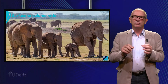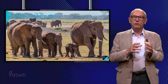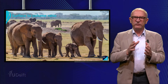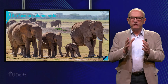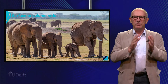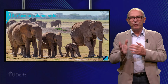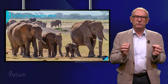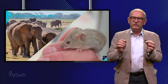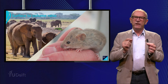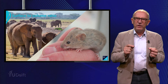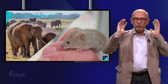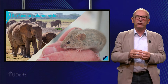Many large animals, like elephants who live in warm areas, do not cool down fast because the surface-to-volume ratio is low in comparison to that of a small animal like a mouse. However, elephants have different ways to compensate for this. For example, they have big ears to increase their surface area without increasing the volume.